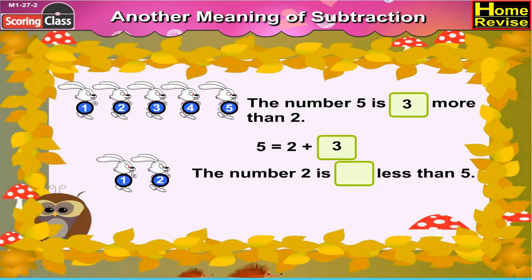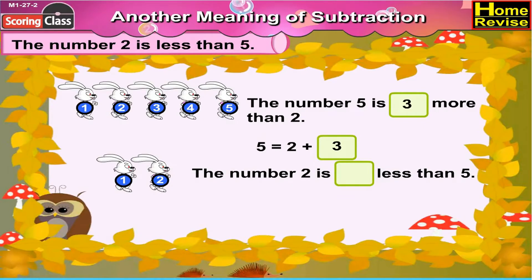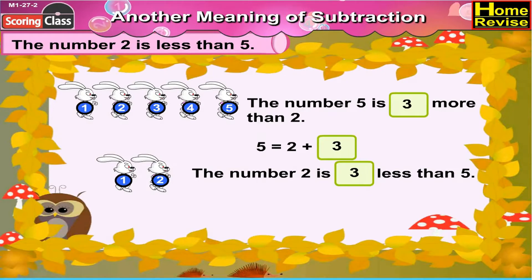The number 2 is blank less than 5. Now, is the number 2 bigger or smaller than 5? Yes, it is smaller than 5. By how many? You are correct, by 3. So the number 2 is 3 less than 5.